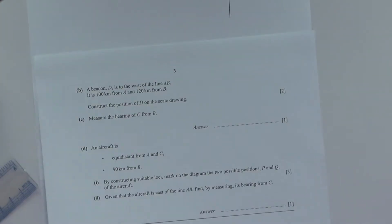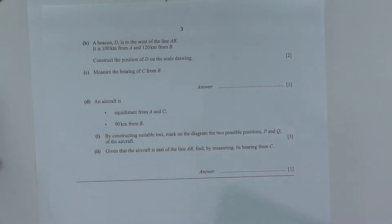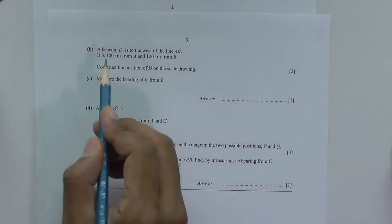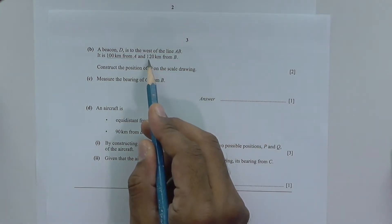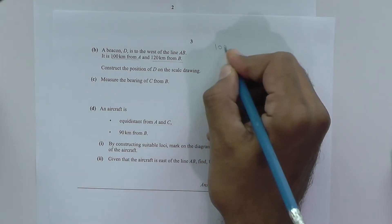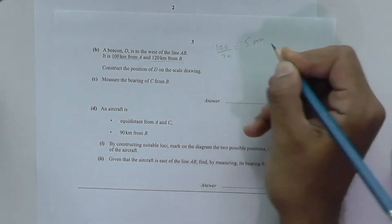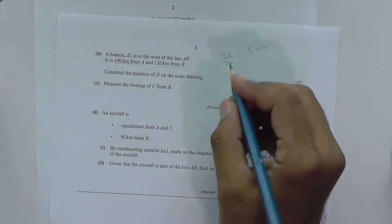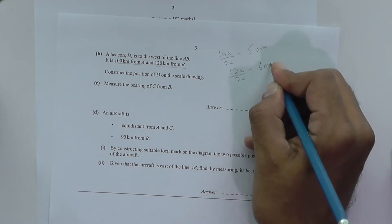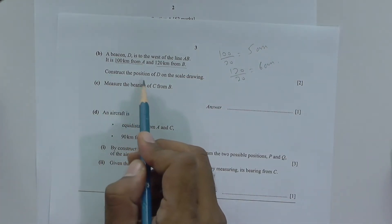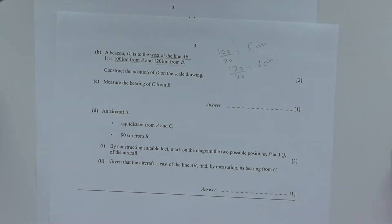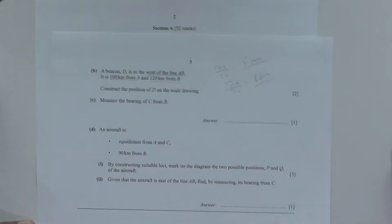The next part says: a beacon D is due west of the line AB, 100 kilometers from A and 120 kilometers from B. From A, if it is 100 kilometers away, divide 100 by 20 to get 5 centimeters on the scale drawing. From B, divide 120 by 20 to get 6 centimeters. We need to construct the position of D, remembering it is due west of line AB.